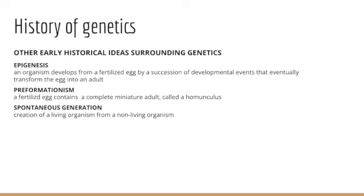In addition, we have preformationism — the idea that a fertilized egg contained a complete miniature adult called a homunculus, and that fertilized egg just continued to grow until we had something the size of an infant ready to be born. We also have the idea of spontaneous generation, discussed from the 1500s through the very early 1800s. This is the idea that the creation of a living organism comes from some kind of non-living organism — life from non-life — something very widely accepted for a few hundred years.